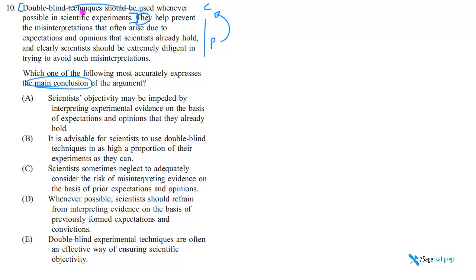Double-blind studies are great for preventing the misinterpretations and expectations that we already have. And clearly, we scientists should be extremely diligent in trying to avoid such misinterpretations. Okay, that seems like—I mean, I don't know. I don't have to be persuaded.